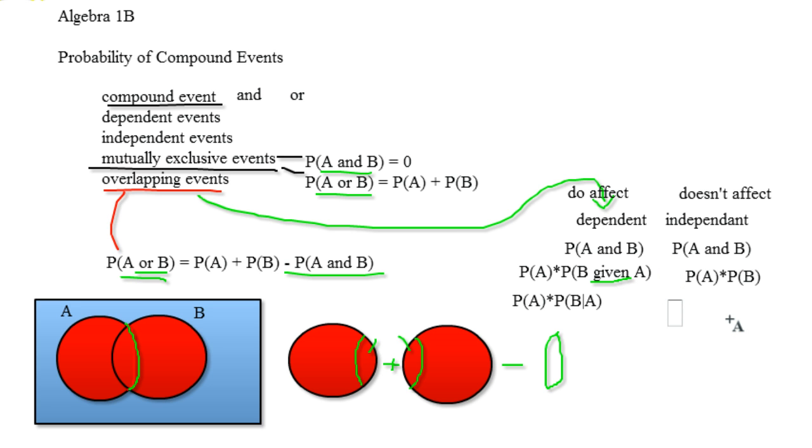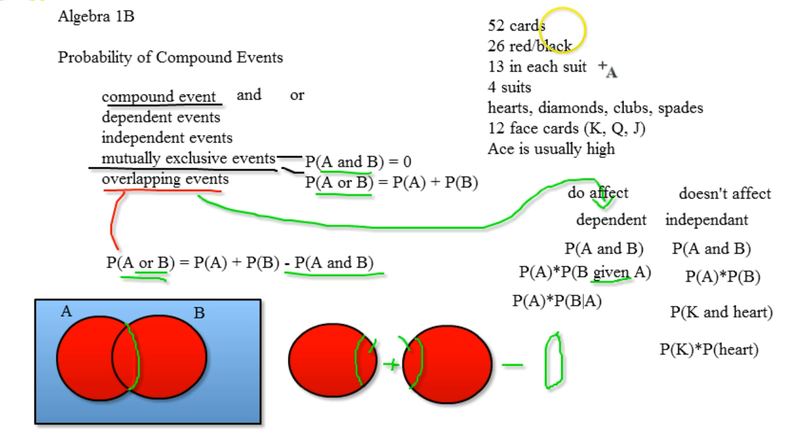So, let's say I was finding the probability of getting a king out of a deck of cards. The probability of getting a king and let's say a heart. Now, some of you guys are probably going, oh, those are both overlapping. Don't we have to do subtraction? No, that's if we were doing OR. So, I'm going to do the probability of a king times it by getting the probability of a heart. For not all of us, we're not going to actually understand the sample space for cards. So, I'm going to take the time to quickly write them out so you can understand. So, here's the sample space of the entirety of it. There's 26 red and black cards, 52 cards total, 13 in each suit. 4 suits, hearts, diamonds, clubs, spades, 12 face cards, king, jack, and queen. And ace is usually a high card.